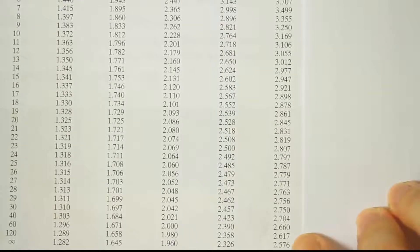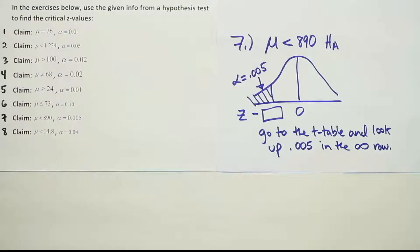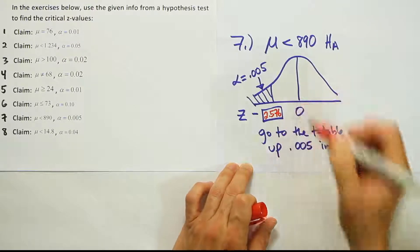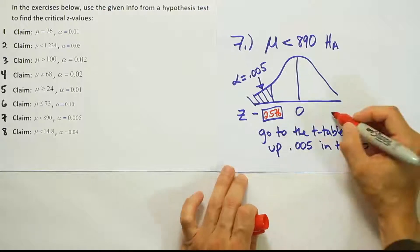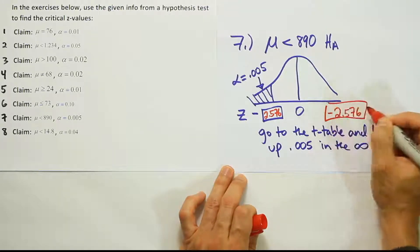We found from the table that the answer for 0.005 in the infinity row is 2.576. So this is our critical value.